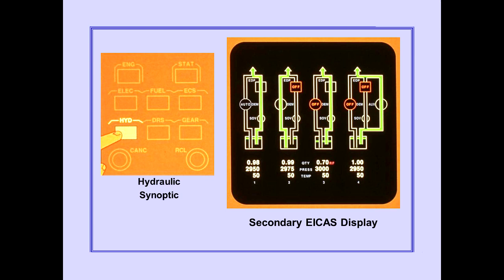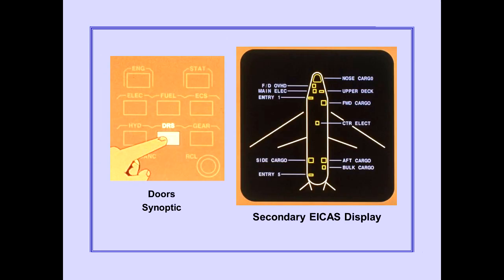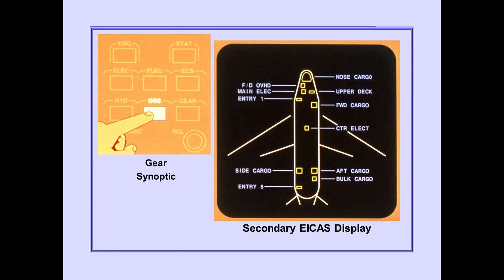Pushing the hydraulic synoptic switch on the ICAST display select panel displays the hydraulic synoptic on the secondary ICAST display. Pushing the doors synoptic switch displays the doors synoptic, providing real-time information about the position of the various doors and door arming handle modes. Pushing the gear synoptic switch displays the gear synoptic, providing real-time information about gear and door positions and brake temperatures.